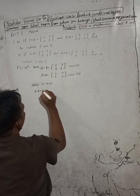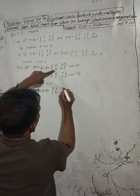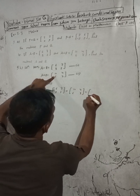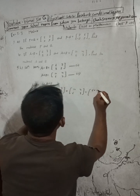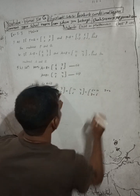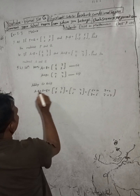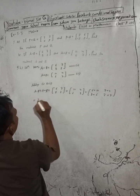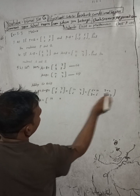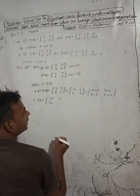Adding equation 1 and equation 2: A minus B plus A plus B equals — minus B and plus B cancel — so this gives 2A equals [6 plus 10, 7 plus 4; 8 plus 6, 2 plus 7], which is 2A equals [16, 11; 14, 9].